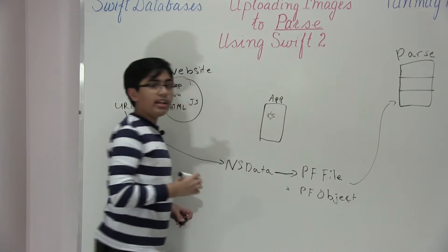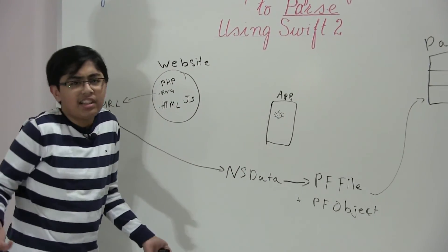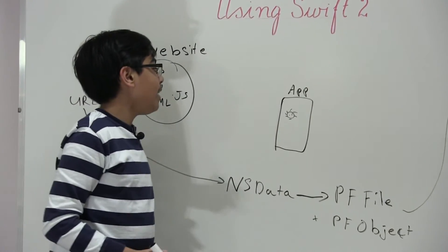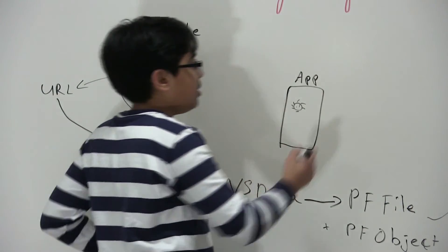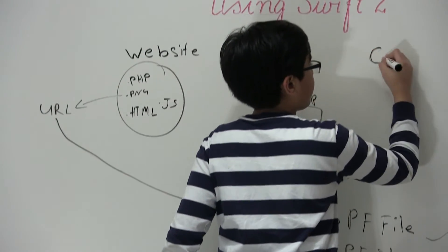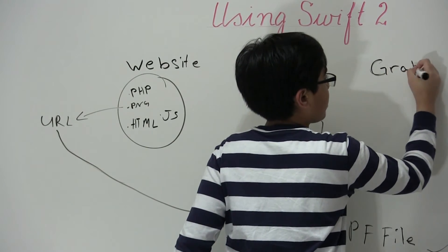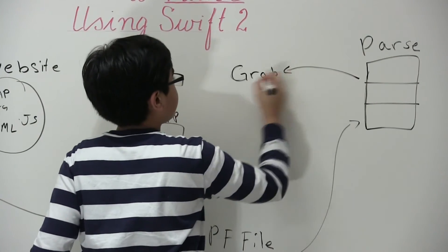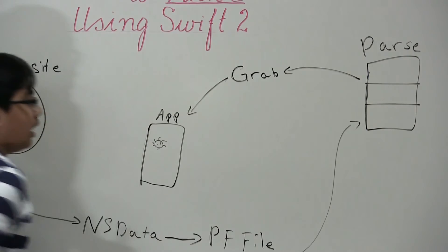If the user clicked over here, they can really click anywhere, but let's just pretend they clicked here. What will happen is the app will grab data from parse into the app.